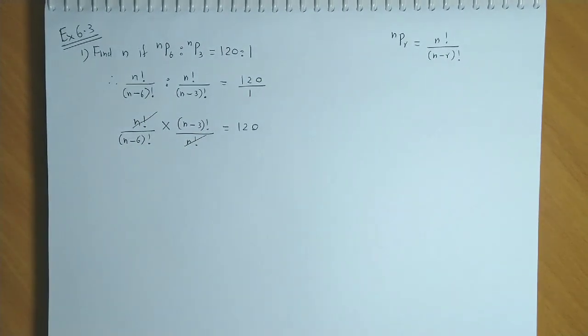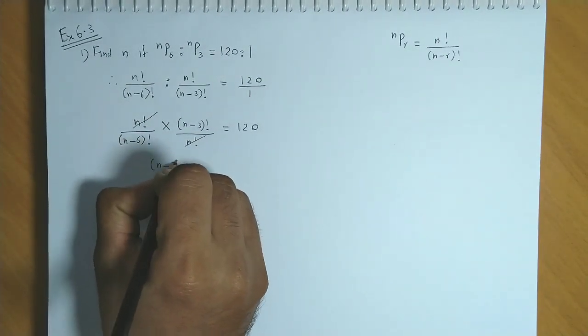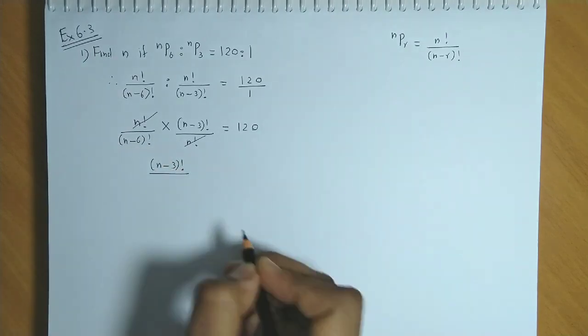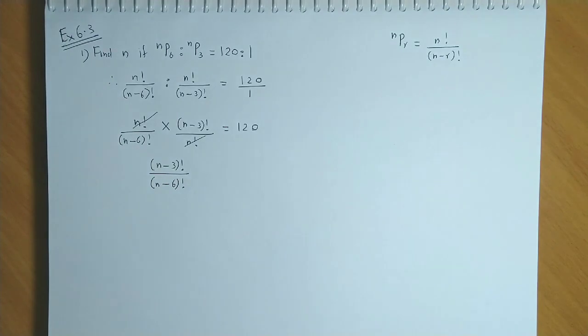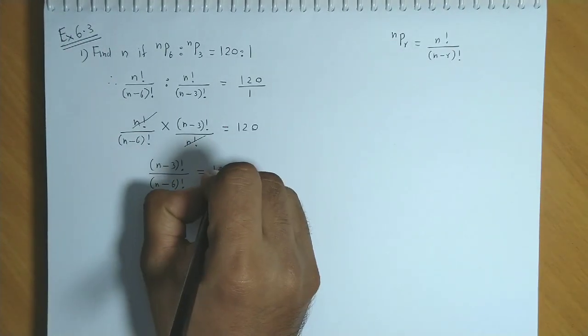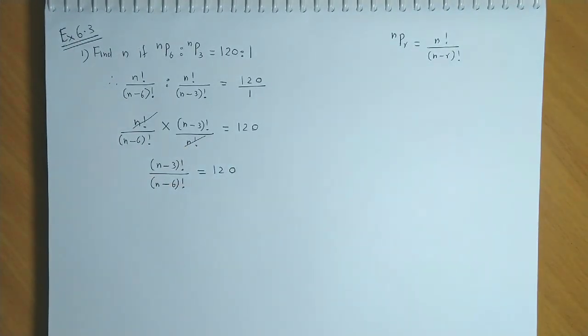We have n factorial and n factorial cancel. So we have n minus 3 factorial upon n minus 6 factorial equal to 120.